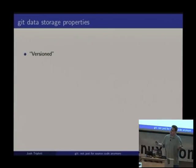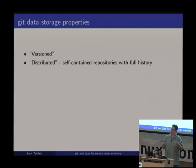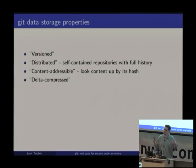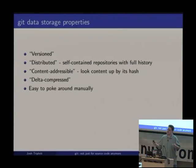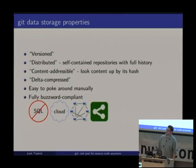Git has, as a data store, various nice properties. Most obviously, it's versioned — it stores multiple versions of objects. It's distributed, which in practice means every repository is self-contained with full history — you don't need a server or local daemon. It's content-addressable, meaning you can look up content by its hash, so Git is effectively a key-value store. It's delta-compressed, so you can store many copies of similar data using relatively little space. It's easy to poke around in manually, and it's fully buzzword-compliant: no SQL, cloud-enabled, peer-to-peer, and social.